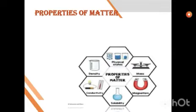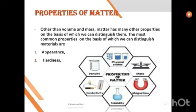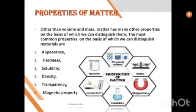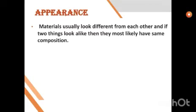Now we will see the properties of matter other than volume and mass. Matter has some other properties. The most common properties on the basis of which we can distinguish materials are: appearance, hardness, solubility, density, transparency, and magnetic property. Let us study them one by one. The first one is appearance — materials usually look different from each other, and if two things look alike, they are mostly likely to have the same composition.